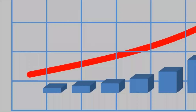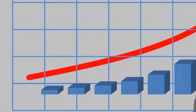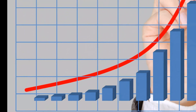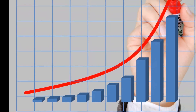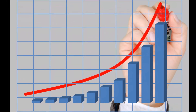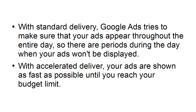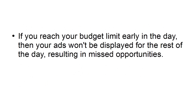Increase your daily budget. One of the most straightforward ways to get more clicks from your Google Ads campaign is to increase your budget. Google Ads works by calculating how often to show your ads based on the delivery method you've chosen. With Standard Delivery, Google Ads tries to make sure that your ads appear throughout the entire day, so there are periods during the day when your ads won't be displayed. With Accelerated Delivery, your ads are shown as fast as possible until you reach your budget limit. If you reach your budget limit early in the day, then your ads won't be displayed for the rest of the day, resulting in missed opportunities.